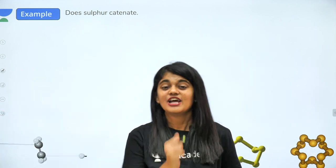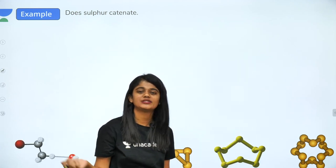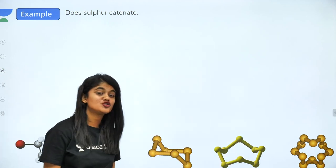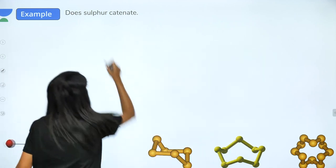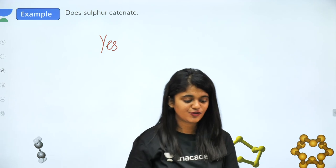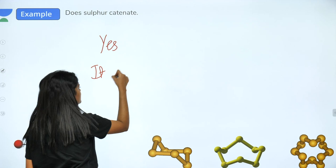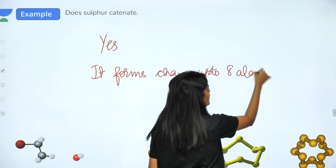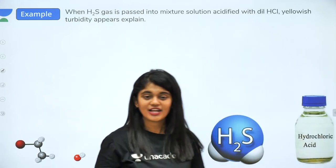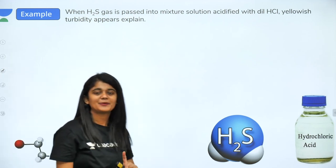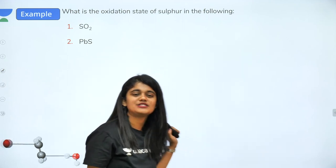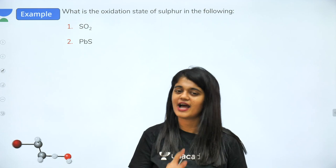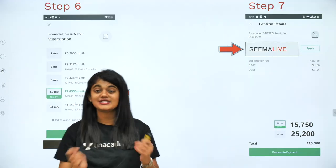The second homework question is about catenation. Carbon is known for catenation — forming long chains with itself in organic compounds. Similarly, sulfur can also undergo catenation and actually has the most tendency to do so, forming chains up to eight atoms (S₈). Oxidation states of sulfur are another homework topic — follow the same method used for nitrogen. These topics are given as homework.